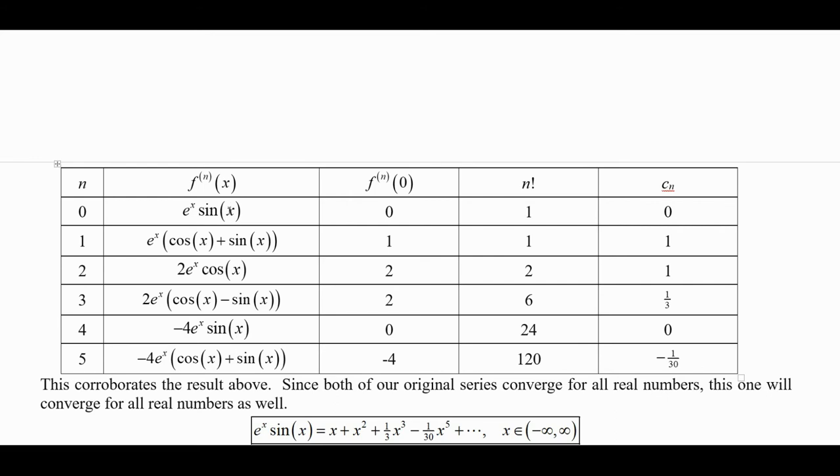Plug in 0. Sin(0) is 0, e^0 is 1, so that's 0. Sin(0) is 0, cos(0) is 1. So this is 1 times e^0 is 1. That's 1. Plug in 0 here. That's cos(0) is 1, e^0 is 1, so 1 times 1 times 2 is 2. Here, sin(0) is 0, cos(0) is 1, so that's 1 times e^0, that's another 1 times the 2 is 2. Sin(0) is 0, so that term is 0. And here, again, sin(0) is 0. So you get cos(0) is 1, e^0 is 1, so you get -4 there.